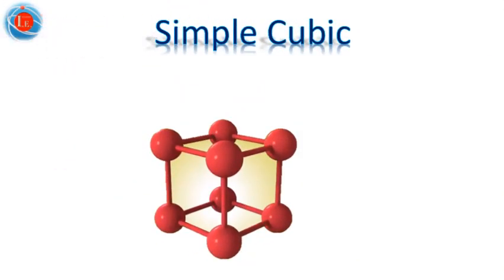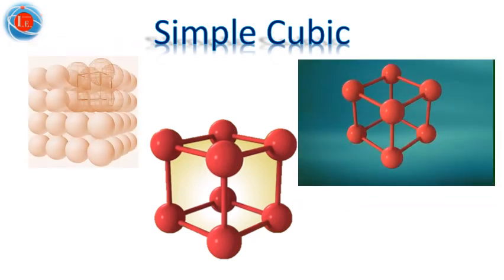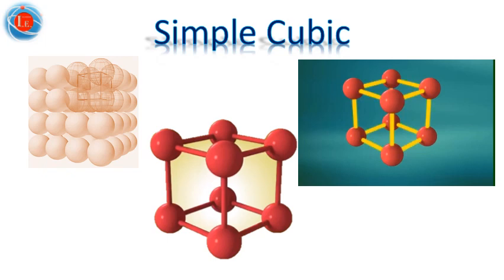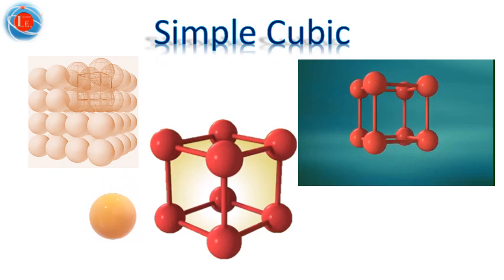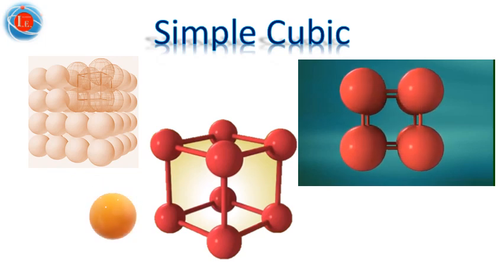Starting with the simple cubic unit cell. In this type of unit cell, there are eight atoms at the corners — one atom for each corner. This type is rarely found in metals and is just used for explanation. If we consider adding an additional atom in the middle of the cube, then we have the body-centred cubic unit cell, as shown in the following slide.